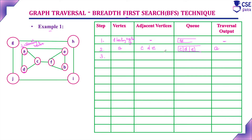The next vertex in the queue is C, so we visit vertex C. Its adjacent vertices are A, D, and F. A has already been visited and placed in the traversal output, so we don't consider it. The remaining unvisited adjacent vertices are D and F. D is already in the queue; F we need to insert. C is now visited and added to the traversal output: A, C.